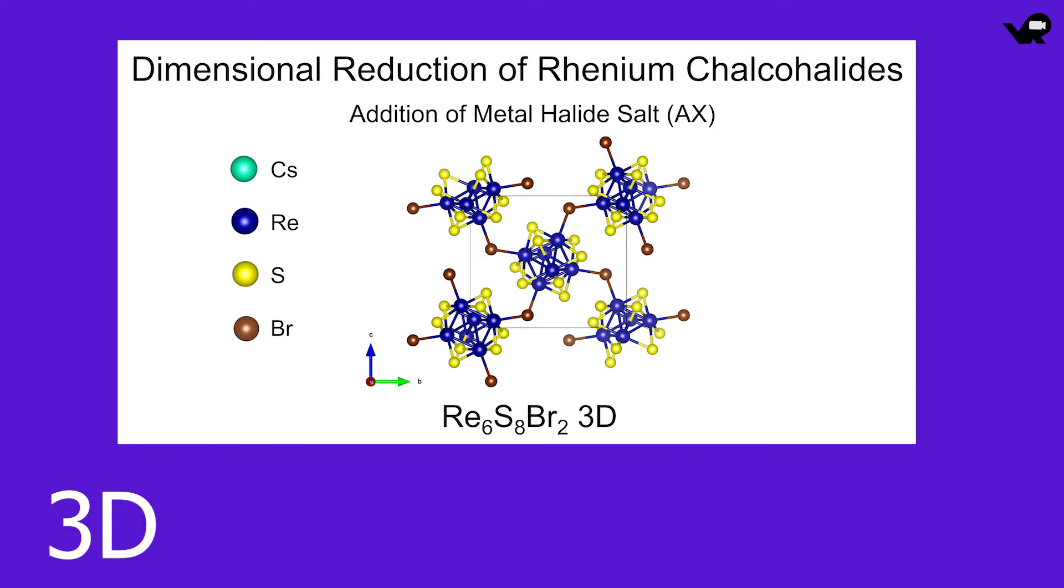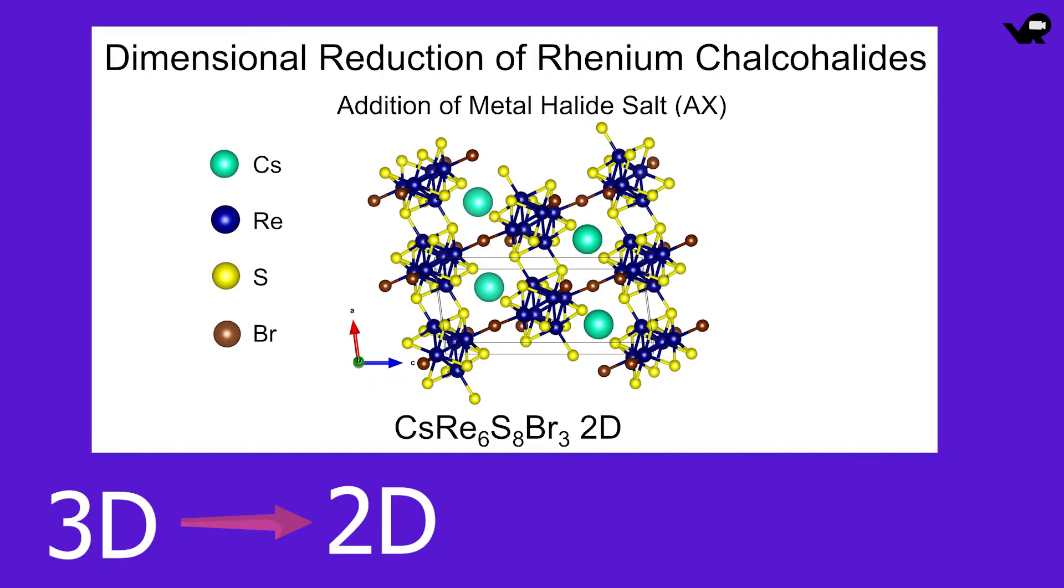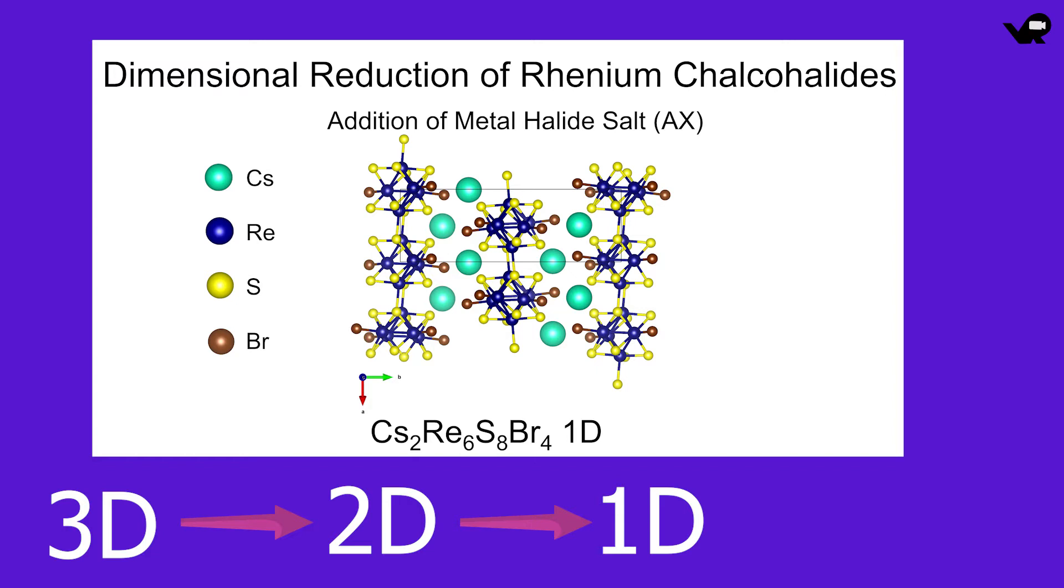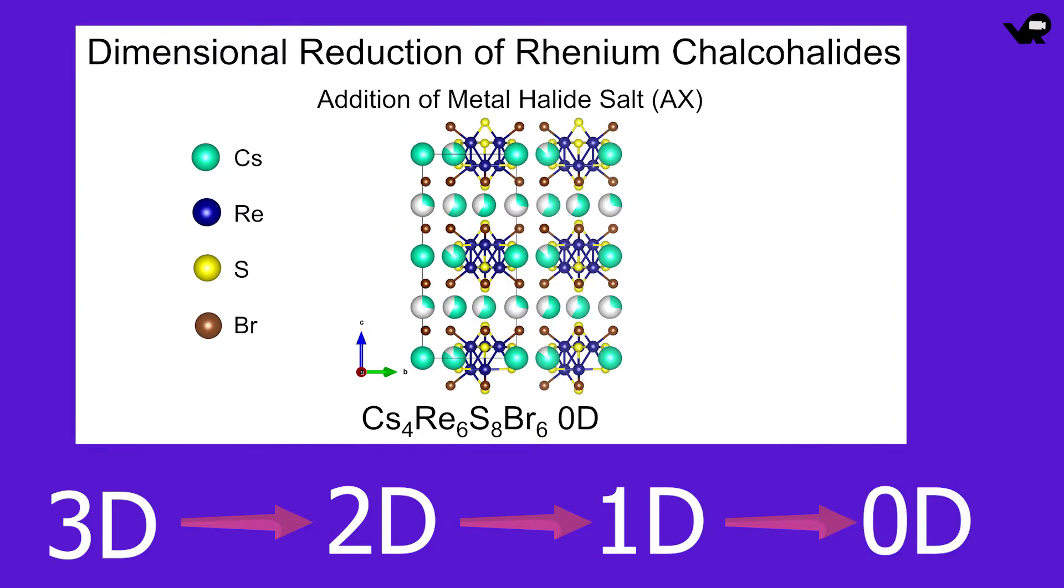As we slowly add salt, we start to break down some of the chemical bonds that connect the cluster in different dimensions, and so eventually as we add more and more salt, we arrive at polymeric one-dimensional chains of these clusters, and finally at isolated cluster units that can be dissolved into solution.